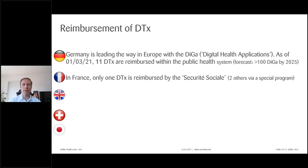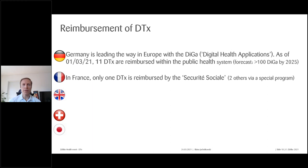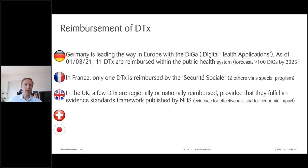In France, there is only one digital therapeutic fully reimbursed like a pill by social security. France was actually a pioneer — the first product from a company called Voluntis was released in 2011, 10 years ago — however at the time the market wasn't ready for this innovation and bureaucracy has slowed penetration since. In the UK, a few digital therapeutics are regionally or nationally reimbursed provided they fulfill an evidence standards framework published by the NHS, requiring evidence for both effectiveness and economic impact.